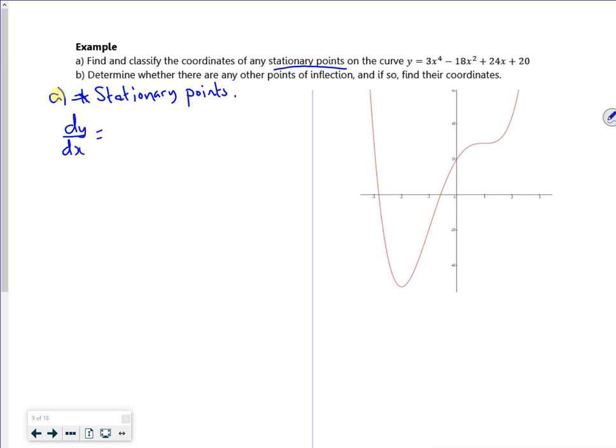So dy/dx is 12x³ - 36x + 24. For stationary points, dy/dx equals zero. I'm going to write the equation out equal to zero - that way I know I'm finding all the points.